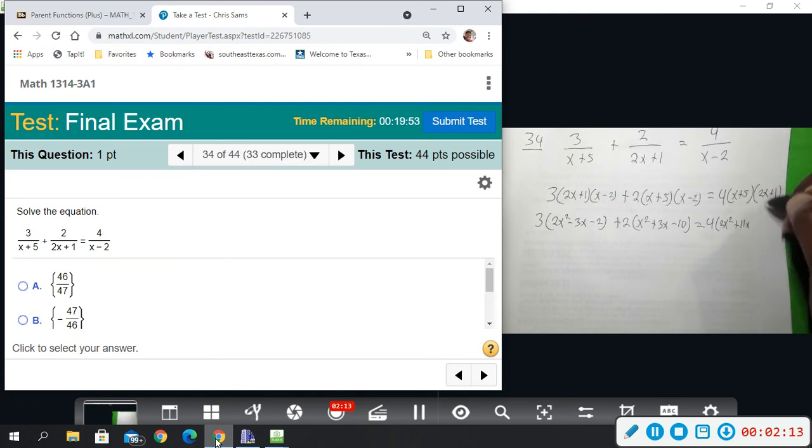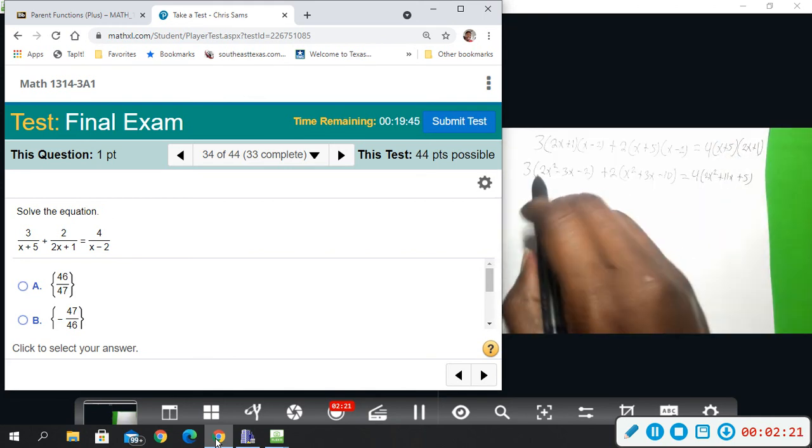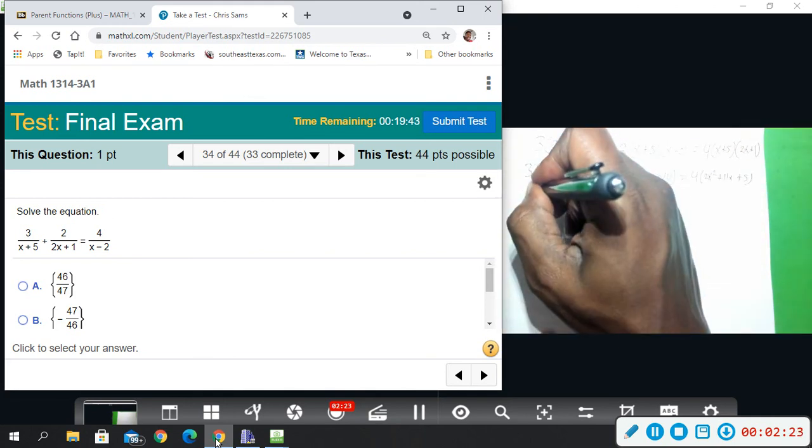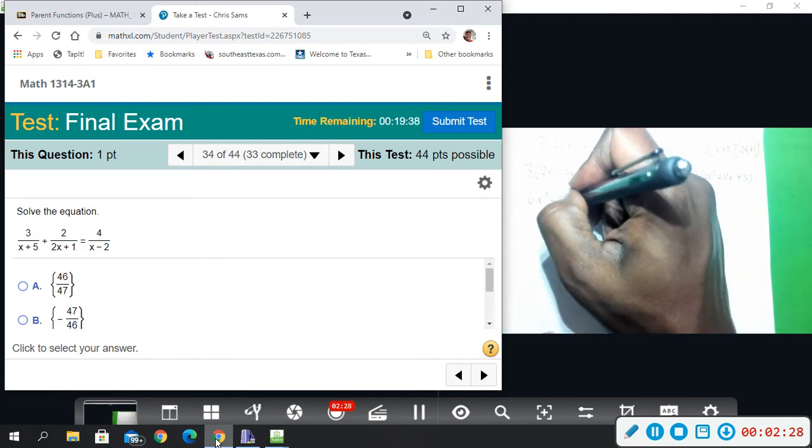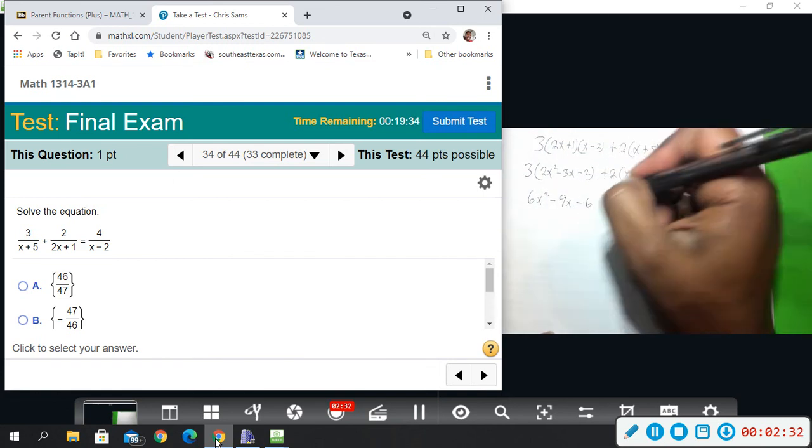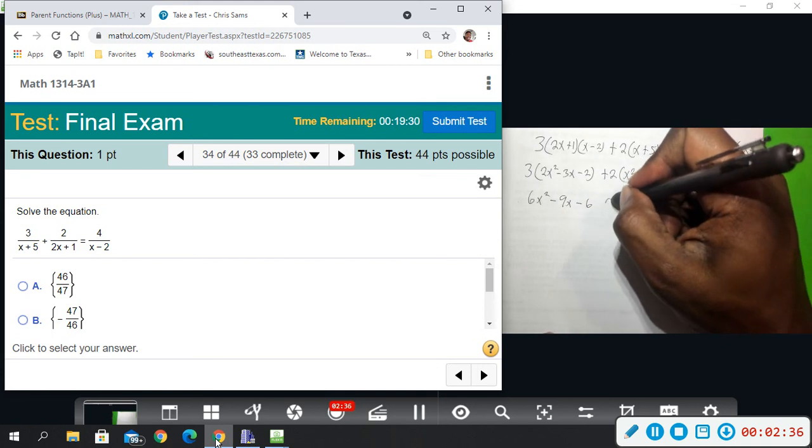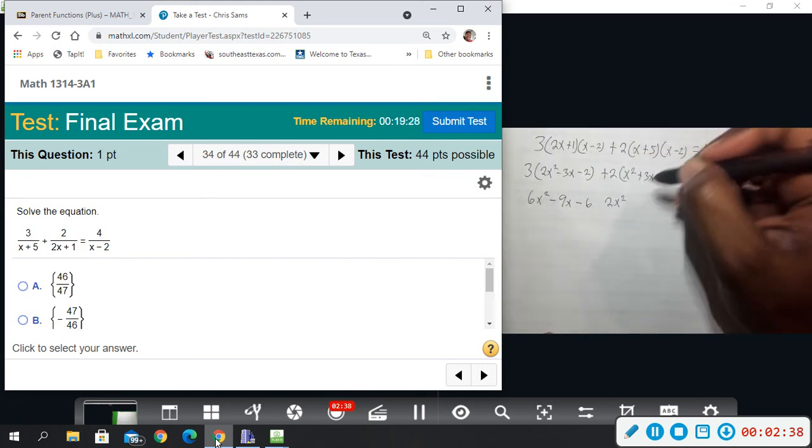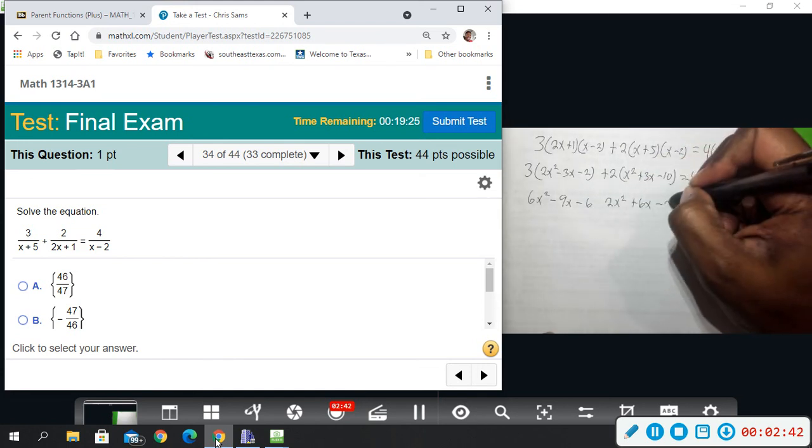Plus 5. Alright, so I'm going to distribute the numbers now. That will give me 6x squared minus 9x minus 6, and then 2x squared plus 6x minus 20.